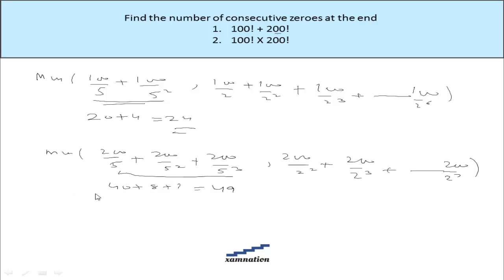In case of 100 factorial plus 200 factorial, the number of consecutive zeros will be 24.